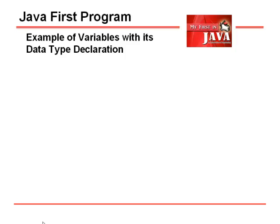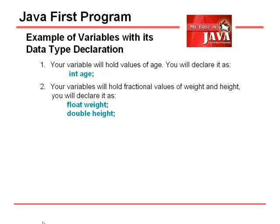Examples of variables with their data type declarations: for example, 'age' should contain whole numbers because age is expressed in whole numbers, so we declare it as 'int age'. Variables that hold fractional values — such as weight or height — we declare as 'float weight' or 'double height'. Float means single precision, double means double precision. They can contain numbers with decimal values.